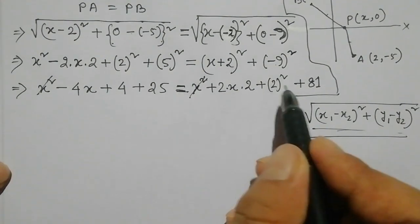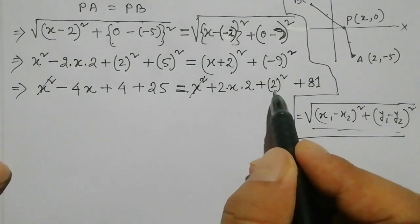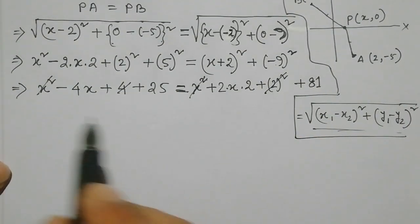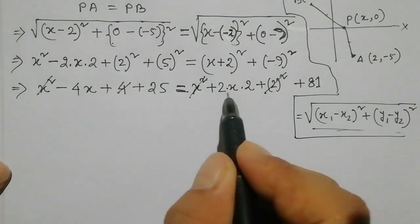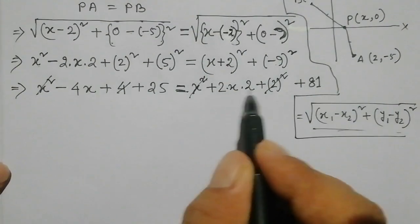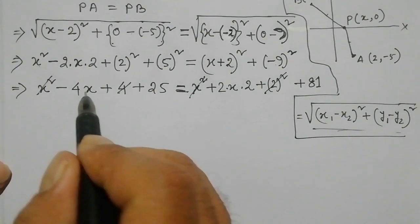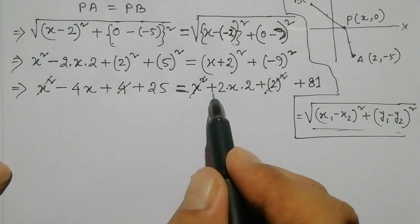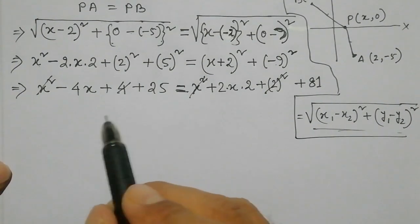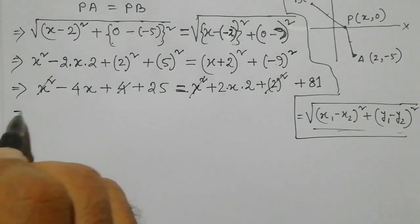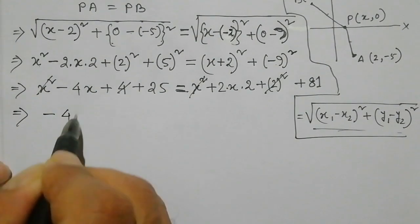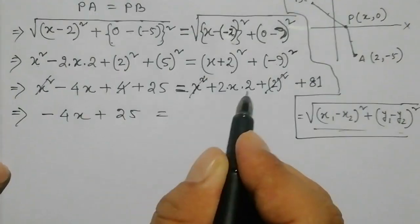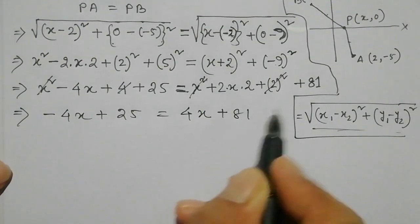What else would you do? Again, let's see: 4x plus — applying the formula — 4x plus, the opposite sine, 4x plus. If I will say 25 and I will say 4x plus 81.